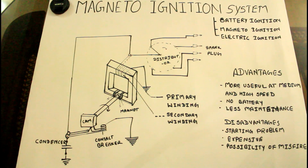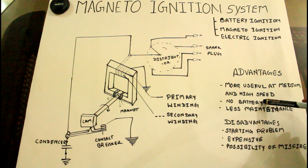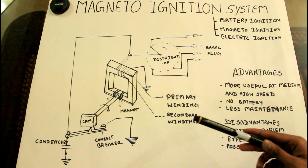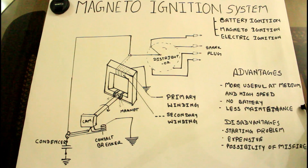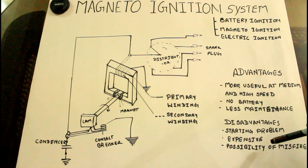The basic advantages of the magneto ignition system are: it is more useful at medium and high speeds, there is no battery required, and it requires less maintenance. The disadvantages are: there can be starting problems due to low RPM, it is expensive, and there is a possibility of misfires.